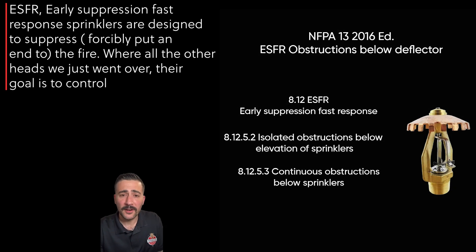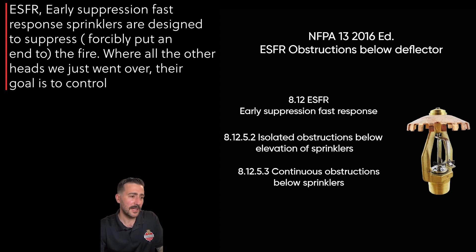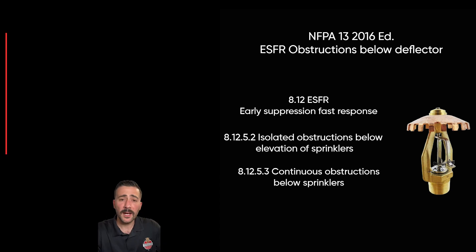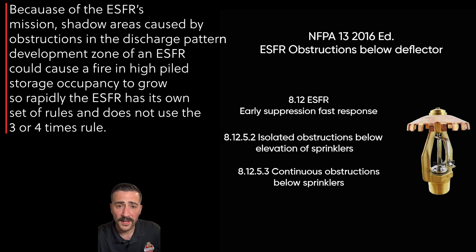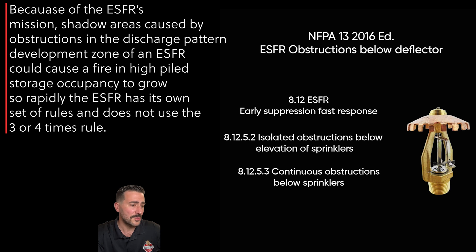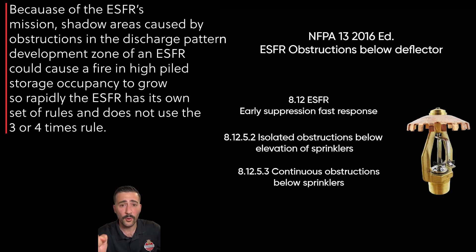The ESFR early suppression fast response sprinklers are designed to suppress the fire, whereas all the other style heads we just covered are designed to control it. Because of the ESFR's mission to suppress the fire, shadow areas caused by obstructions in the discharge pattern development zone could cause a fire in a high-piled storage occupancy to grow so rapidly that the ESFR has its own set of rules and does not use the three or the four times rule.